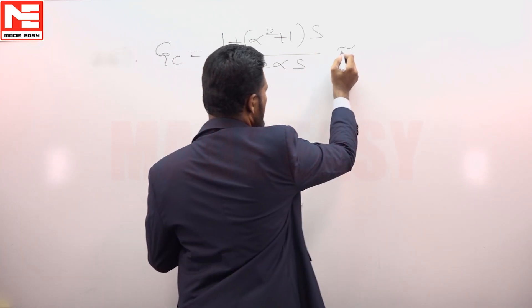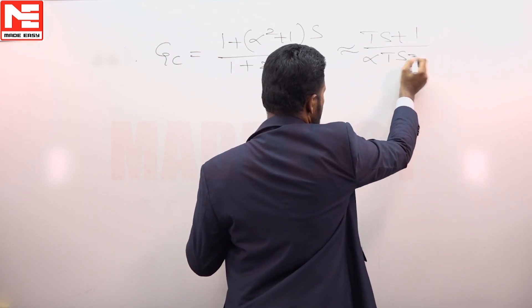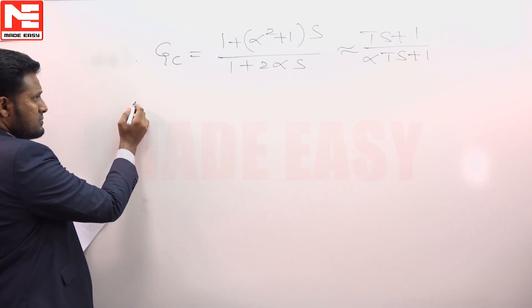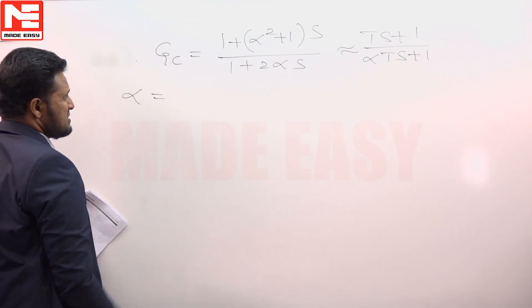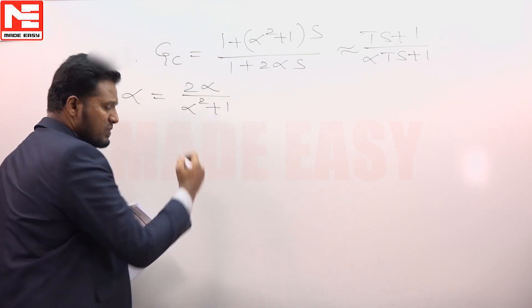Comparing this with Ts plus 1 upon alpha Ts plus 1, we get alpha of the system to be 2 alpha by alpha squared plus 1.